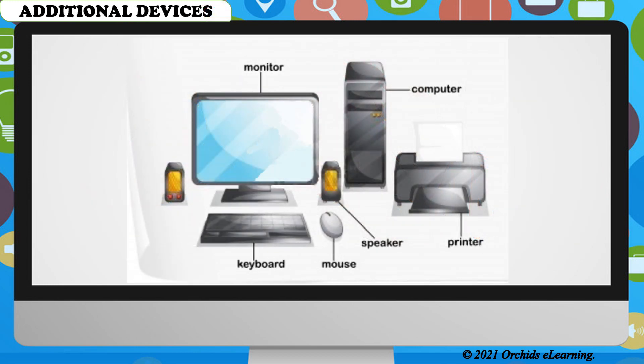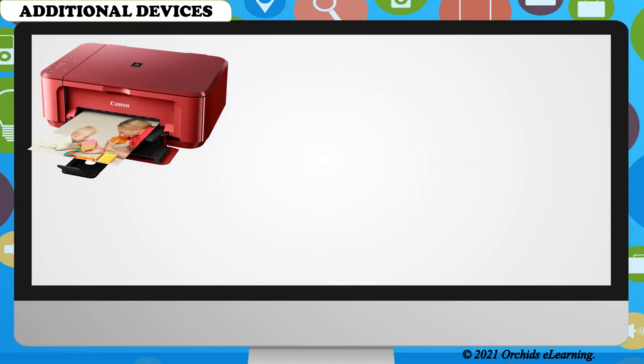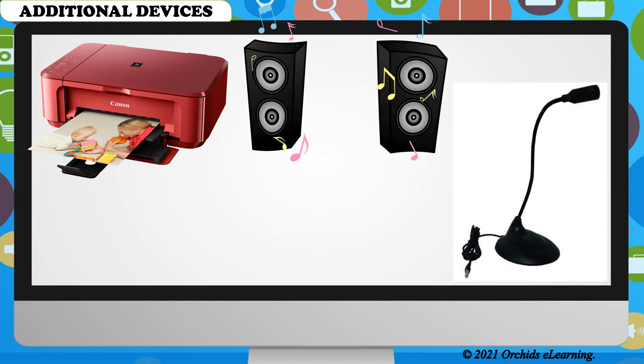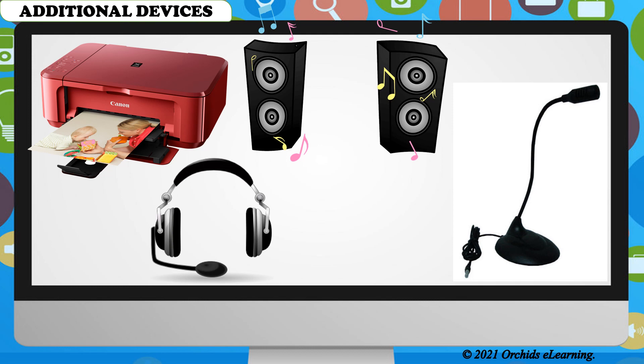Now, let us learn about the additional devices connected to a computer. A computer system can have many additional parts. Some of these are printer, speakers, microphone, and headphones. All the additional parts also have specific functions.